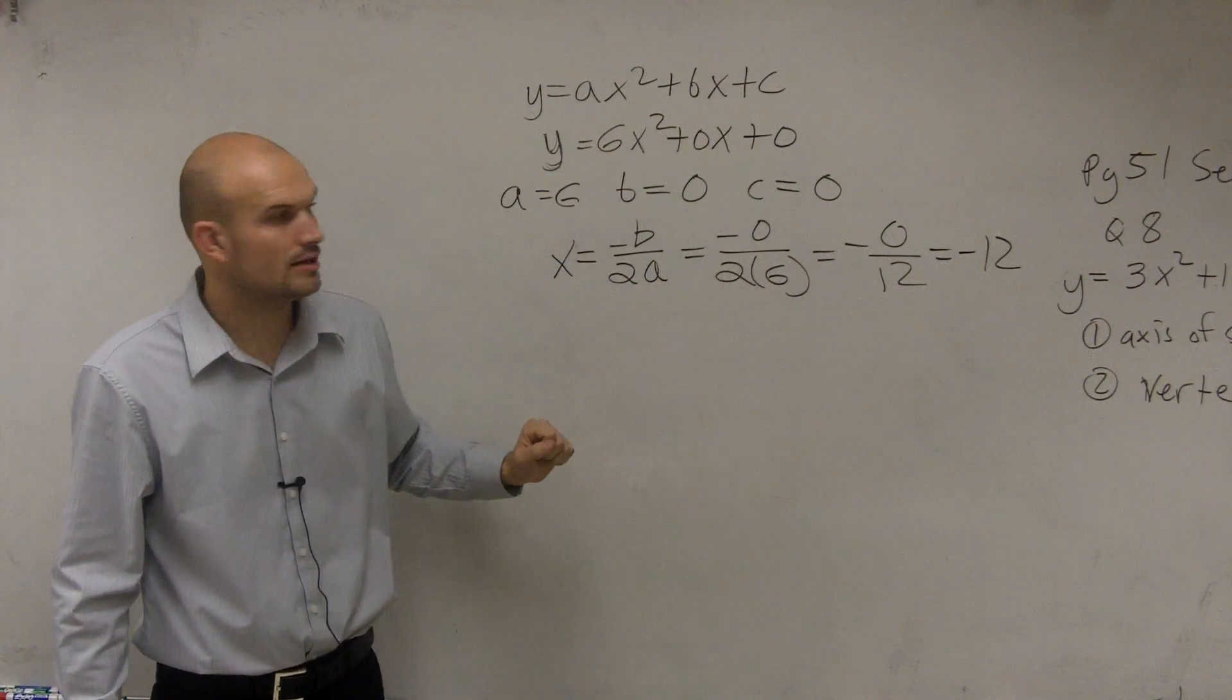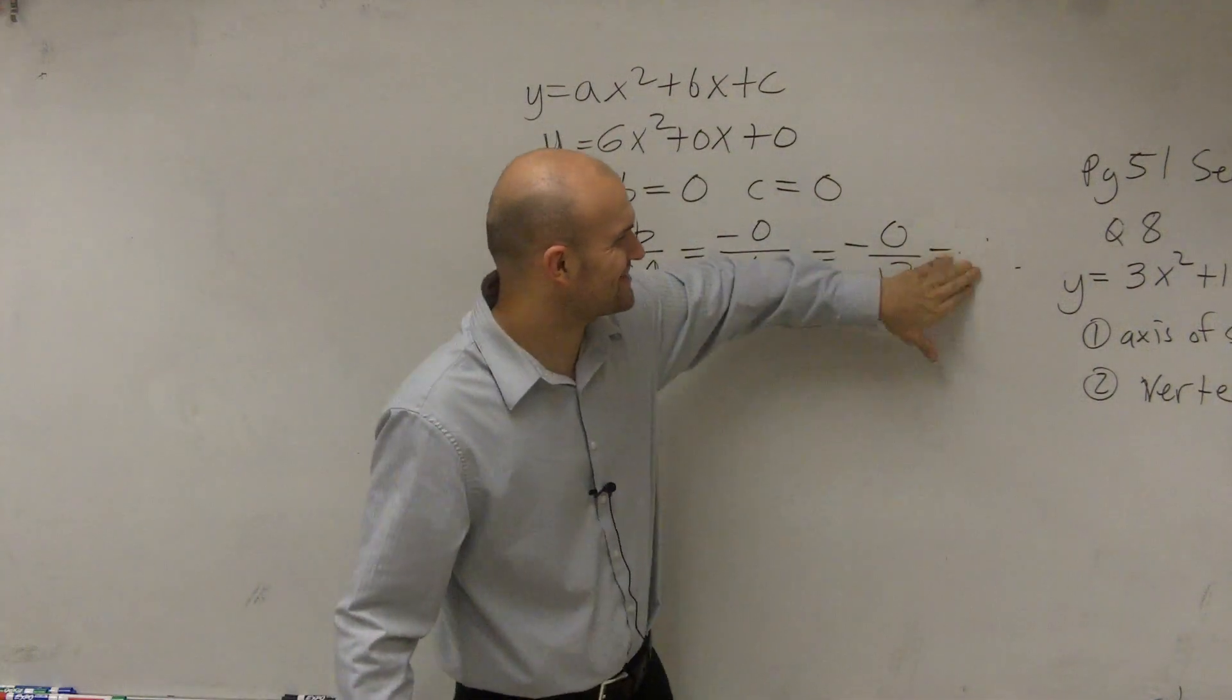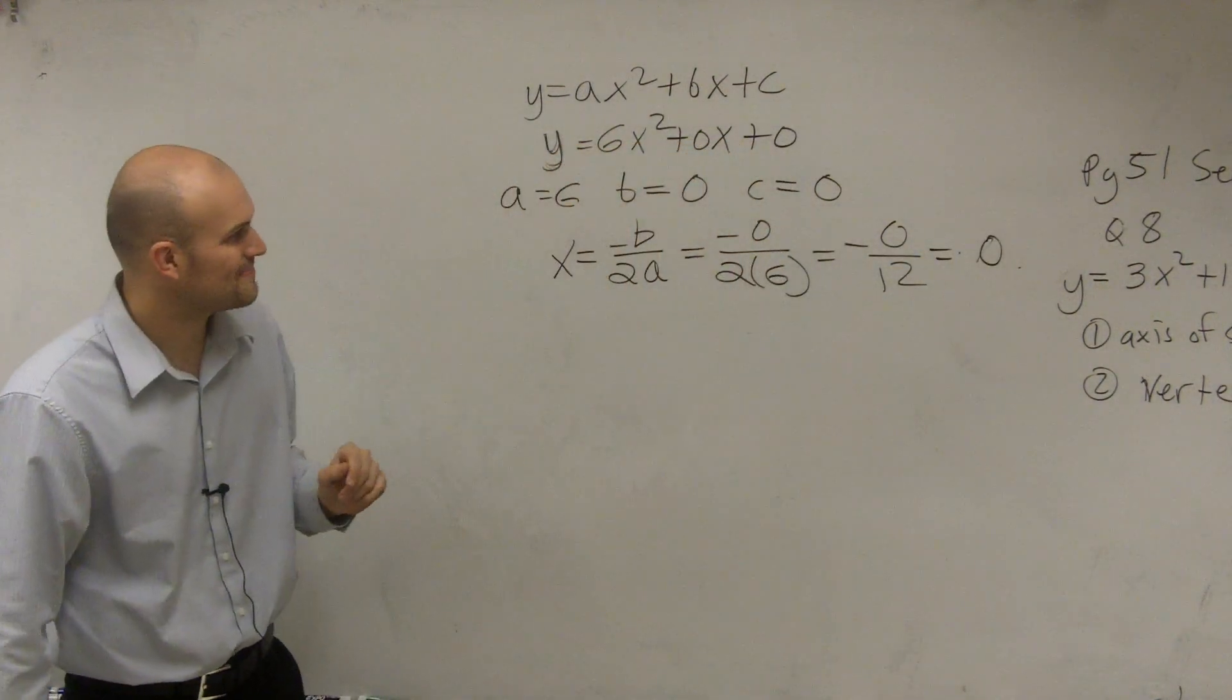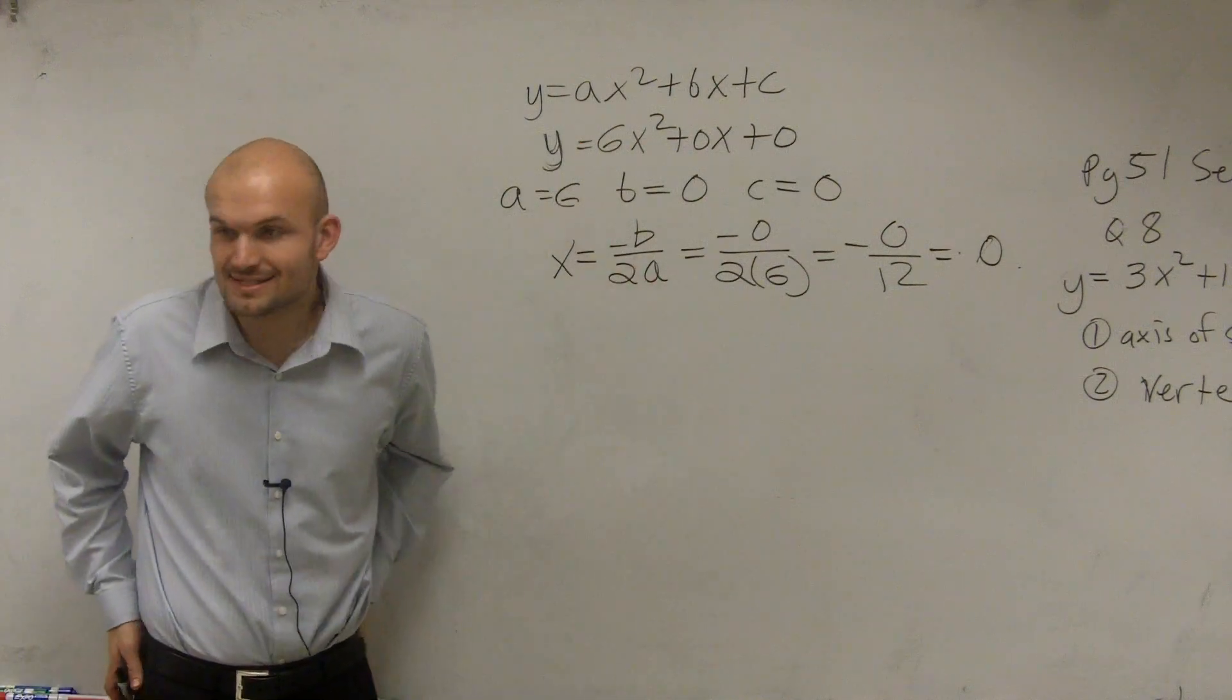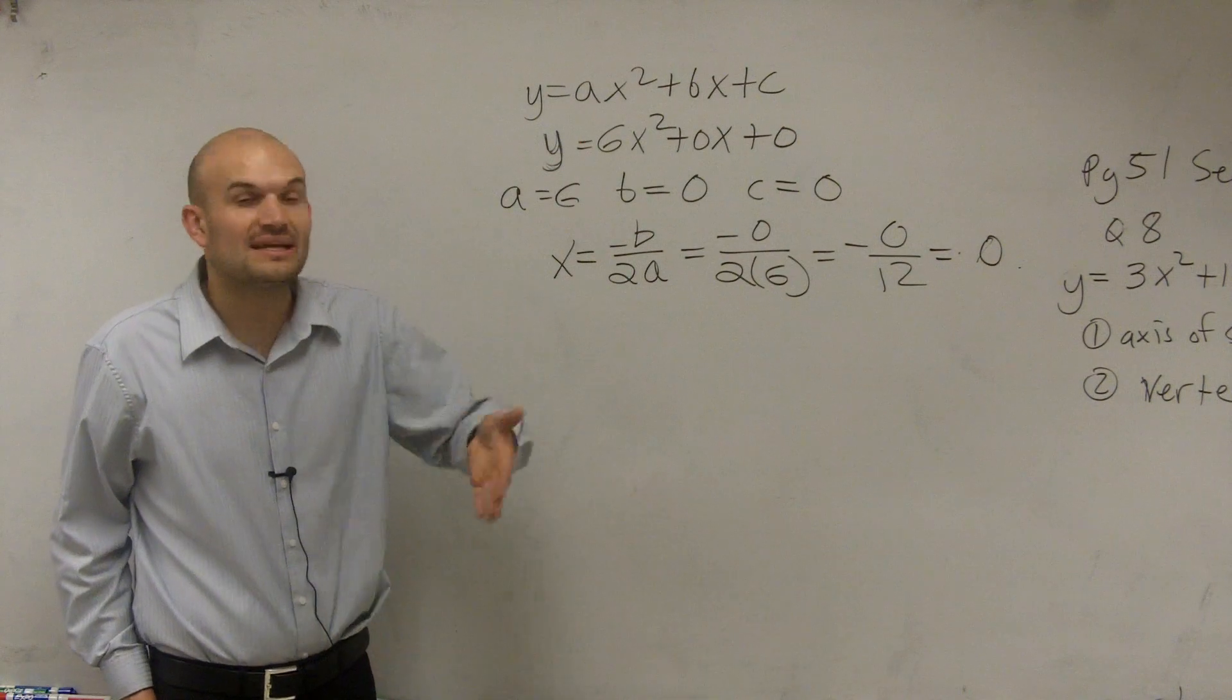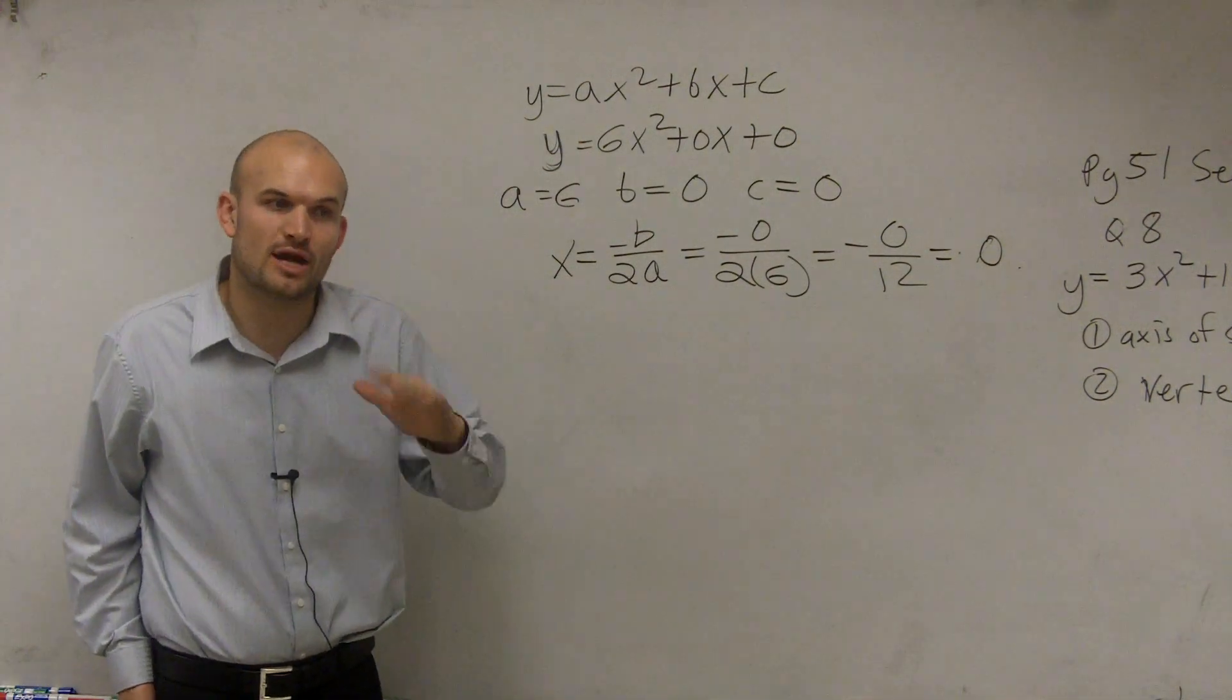Then what we look up over here, I'm sorry, why did I write negative 12? It's 0. 0 divided by any number is 0, sorry. So therefore, our axis of symmetry is x equals 0. That means that's the line that's going to split our parabola.